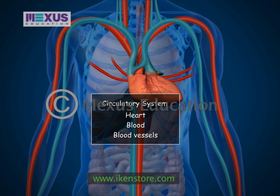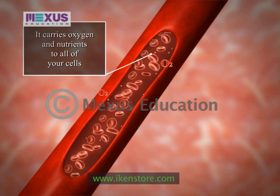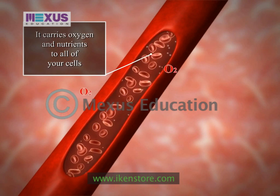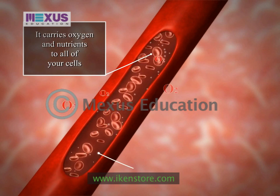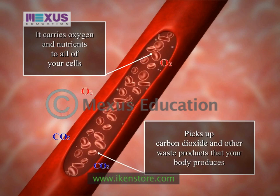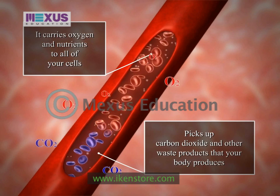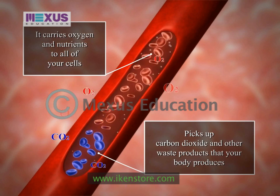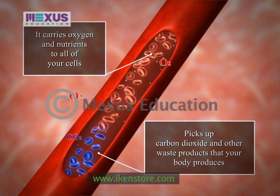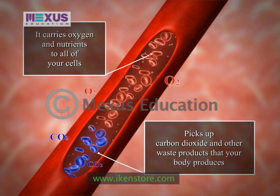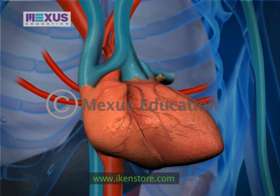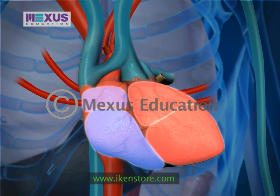The circulatory system does two important jobs in the body: it carries oxygen and nutrients to all of your cells, and picks up carbon dioxide and other waste products that your body produces so they can be disposed of.